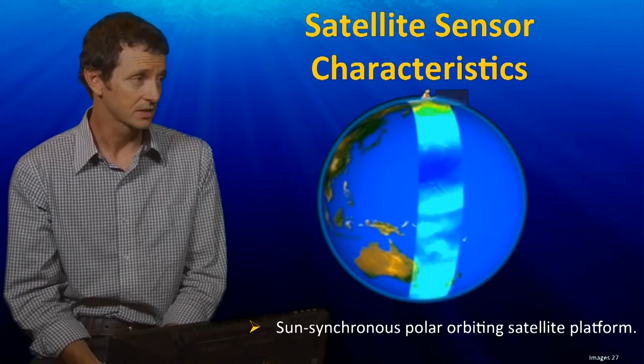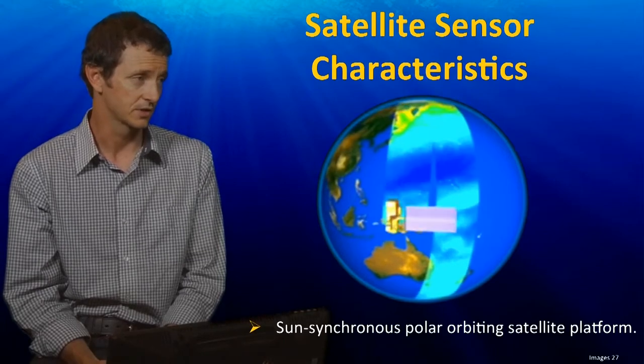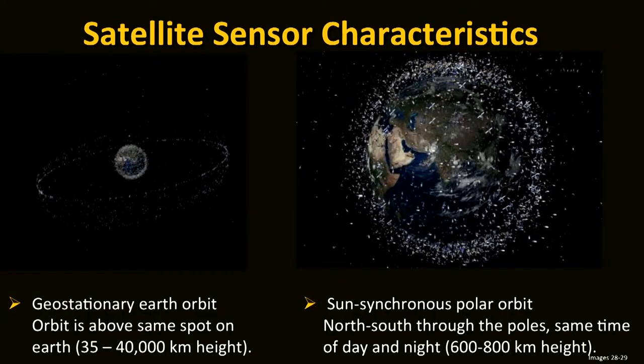This is a polar orbiting sun-synchronous satellite that's collecting information from the Earth's surface. There are two types of satellite orbits used to collect information about the surface of the Earth, coasts, and oceans. The sun-synchronous polar orbiter is in a low Earth orbit, between 400 and 800 kilometres above the surface. It takes about 100 minutes for the satellite to go around the Earth, and they can come back and collect images from every day to every two weeks.